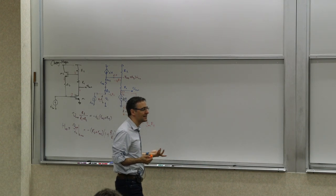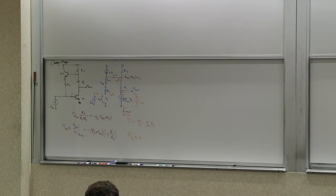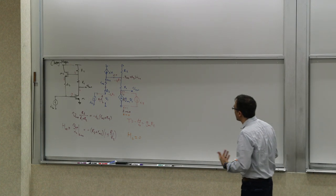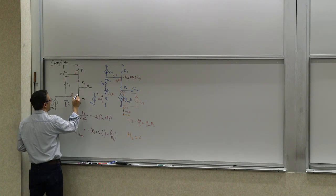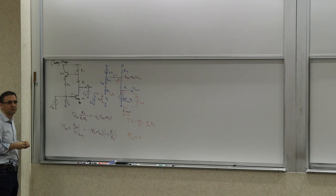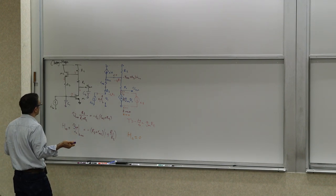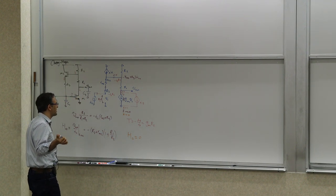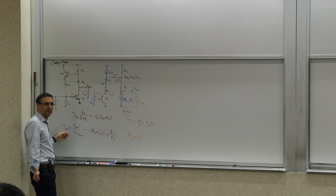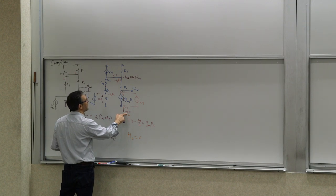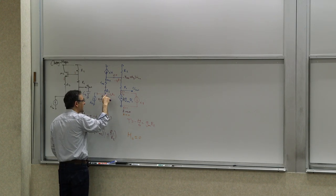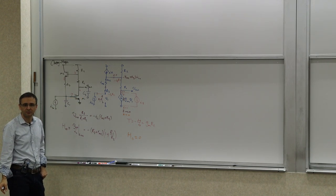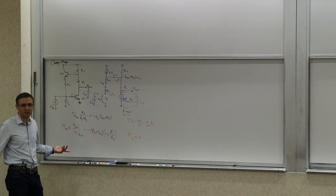Now let's consider what happens when there are capacitors in the circuit — say C1 at the input and C2 at the output. Under H-infinity, when K goes to infinity, V1 is forced to zero, so C1 carries no current and doesn't enter the equation. C2 sits at the output but whatever the feedback does, it forces the output voltage to maintain the relationship with the input current, so C2 doesn't enter the H-infinity equation either. H-infinity does not change.